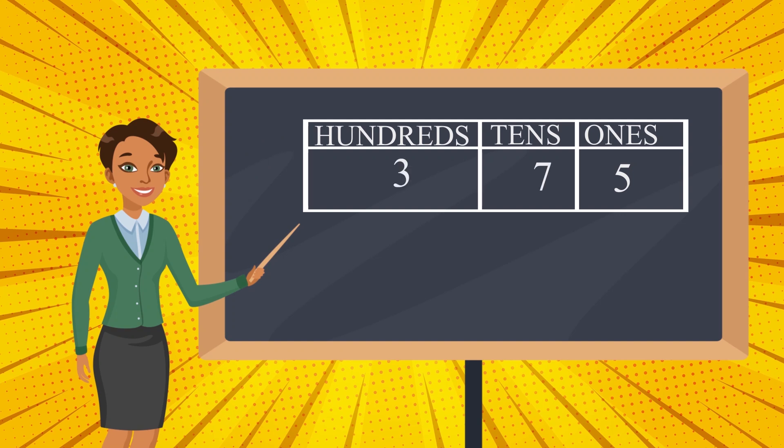Now, shall we find out the place value? What is the place value of 7 here? We can say it as 7 is sitting in 10's place. So, 7 in 10's is 70.